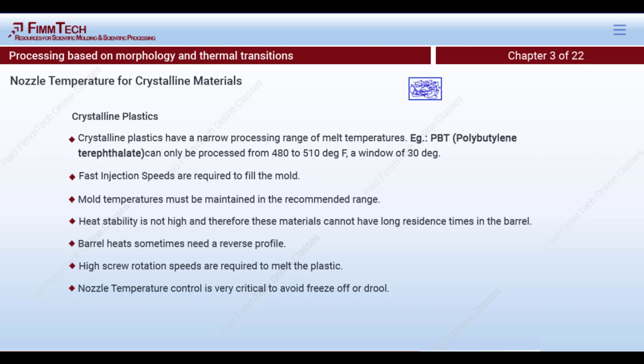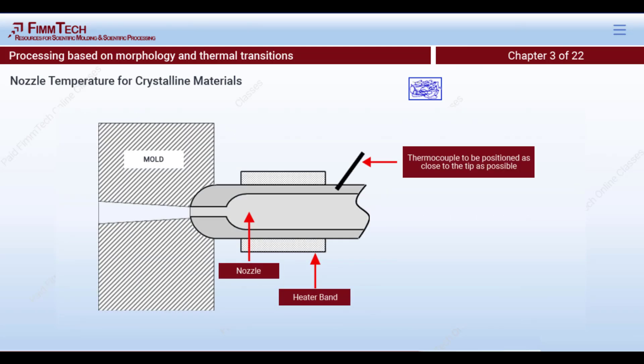Nozzle temperature control for crystalline materials is very critical to avoid freeze-off or drool. In thermoplastic injection molding, the mold is considered cold relative to the melt temperature — even if the actual mold temperature is 300°F, as in the case of PEI (trade name Ultem), the mold is cold compared to a melt of ~700°F. When the heated nozzle touches the mold, the nozzle tip cools off. For crystalline materials like nylons, if the temperature drops below about 480°F, the plastic freezes off immediately and blocks injection on the next shot.